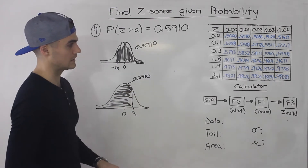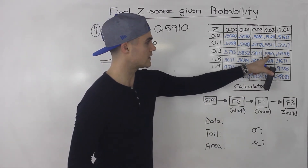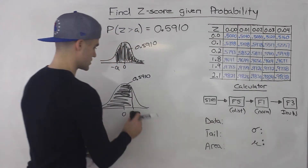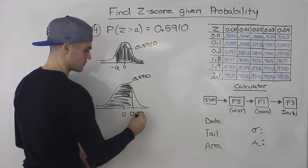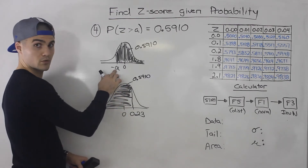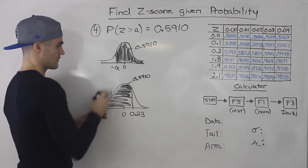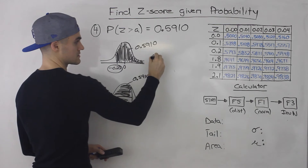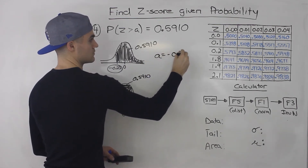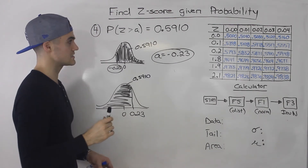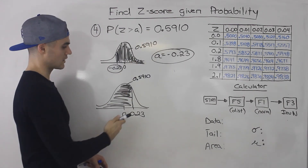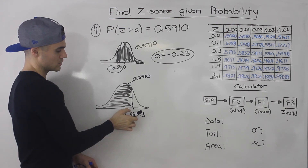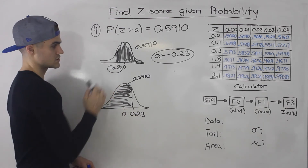So if we look up 0.591 in the table, it's right there: 0.591. The corresponding z-score is 0.23. So this positive a-value is 0.23. But remember, we're looking for the negative a-value. So the corresponding negative a-value is negative 0.23 — that's the answer. That's how you use the table for this scenario: you redraw the right-tail probability as a left-tail probability, find that positive z-score, then switch it to negative.